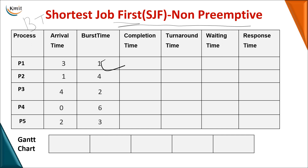For the SJF non-preemptive example, we first build the Gantt chart. At arrival time zero, P4 is the only process present, so it is given the CPU for its burst time of six milliseconds. After six milliseconds, the processes in the ready queue are P1 (arrived at three), P2 (arrived at one), P3 (arrived at four), and P5 (arrived at two). Now we select based on burst time rather than arrival time.